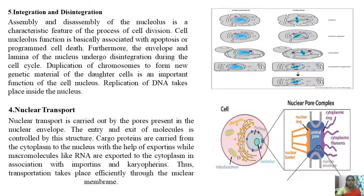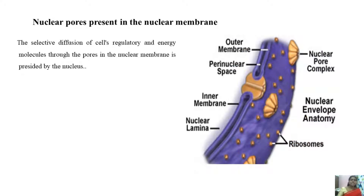Nuclear transport is carried out by the pores present on the nuclear envelope; the entry and exit of molecules from the nucleus is controlled by this structure. Cargo proteins are carried from the cytoplasm to the nucleus with the help of importins, while macromolecules like RNA are exported to the cytoplasm in association with exportins and karyopherins. Transportation thus takes place efficiently through the nuclear membrane. Here you can see the structure of the nuclear pore with a spoke-like arrangement which controls and regulates the movement of molecules between the nucleus and cytoplasm.